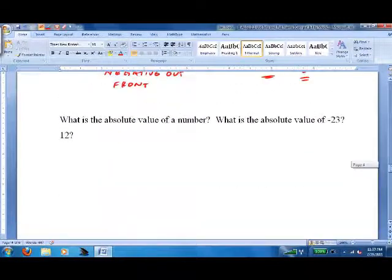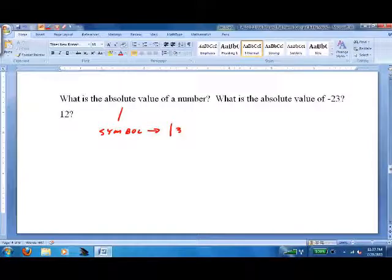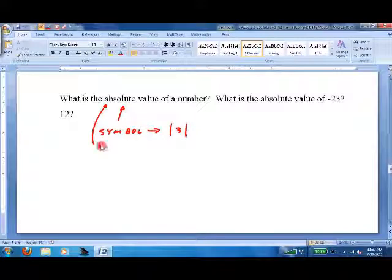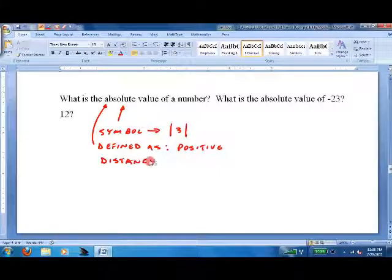And, last but not least, what is the absolute value of a number? Well, first off, the symbol are two vertical lines. And, secondly, we define it as positive, so it's always going to be a positive number, distance from 0.